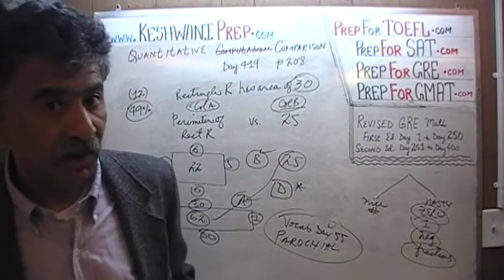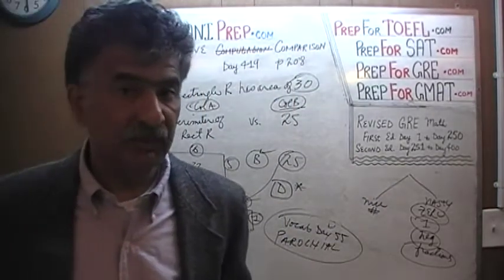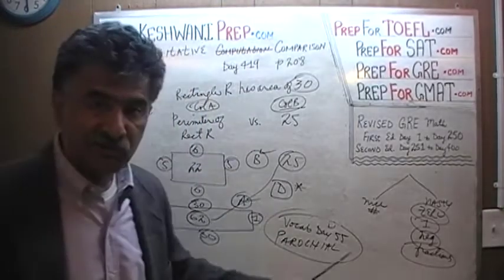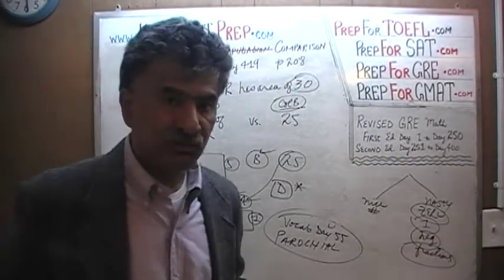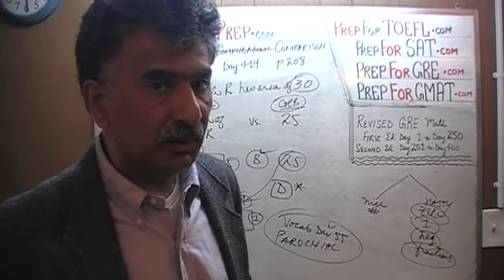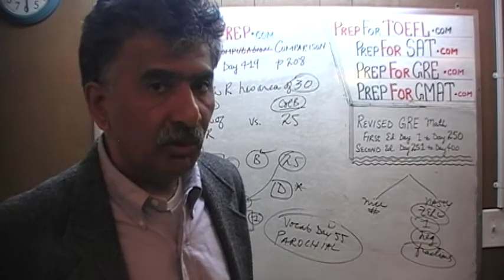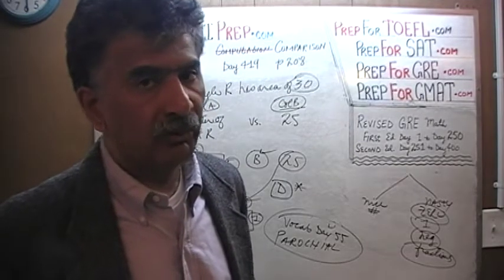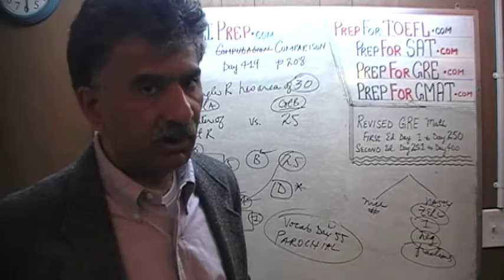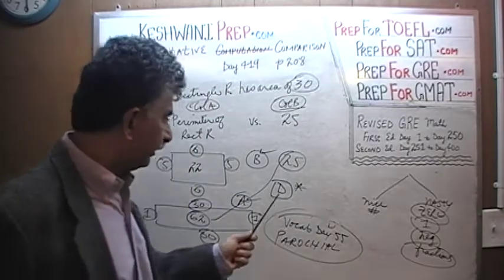People got it wrong not because the problem was difficult — the problem actually is a very simple question. They forget what these answer choices mean. Answer choices always mean that whichever answer you are picking, that quantity is always, always greater. And if you cannot make that determination, then the answer is D.